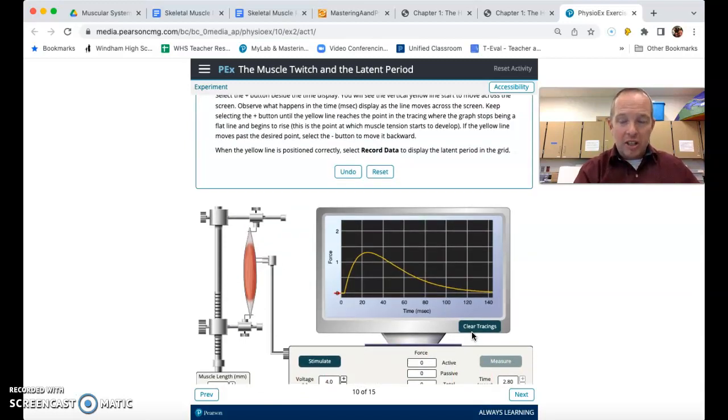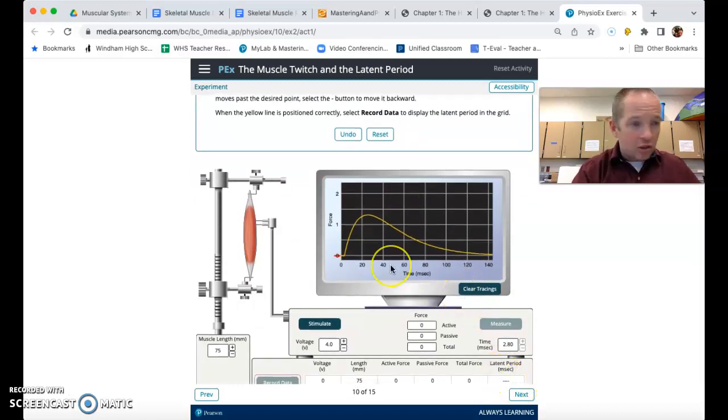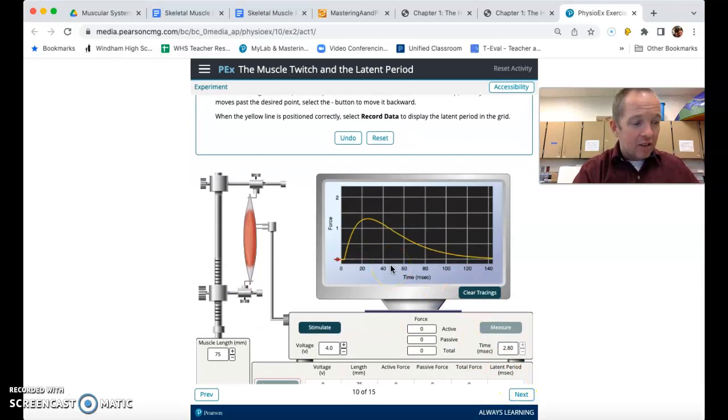And that 2.8 milliseconds is the time it takes for all of the processes to occur. For calcium to come into the muscle fiber, for actin to bind to myosin, and to get ready to actually contract the muscle. Only when all that happens can we start to contract and then relax that sarcomere.